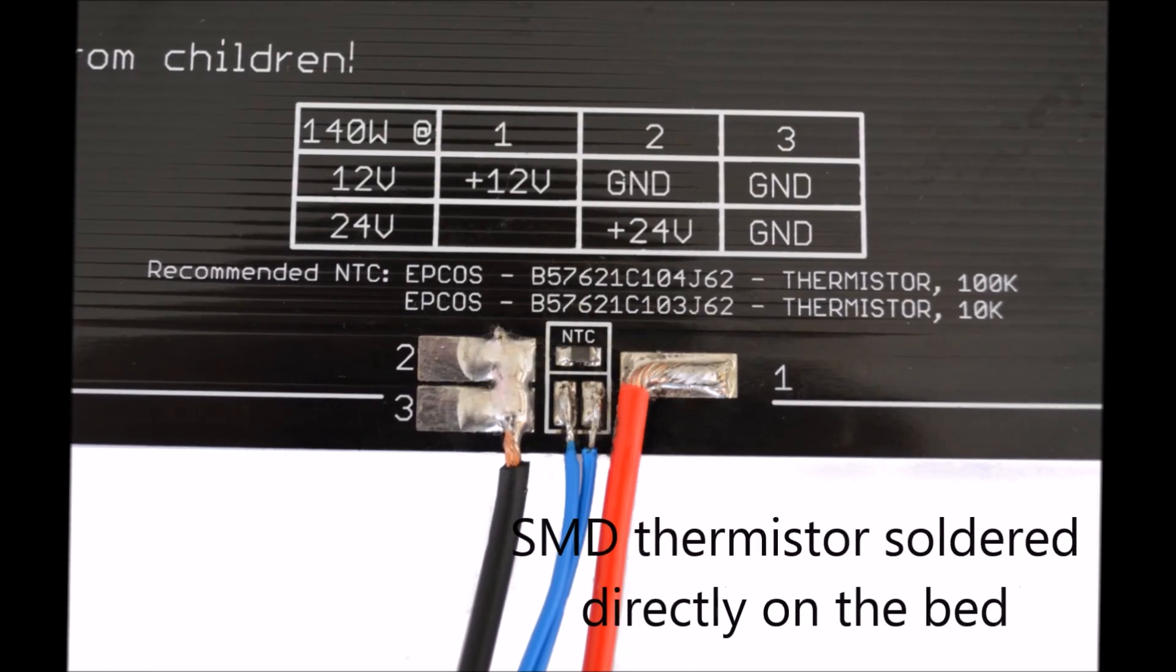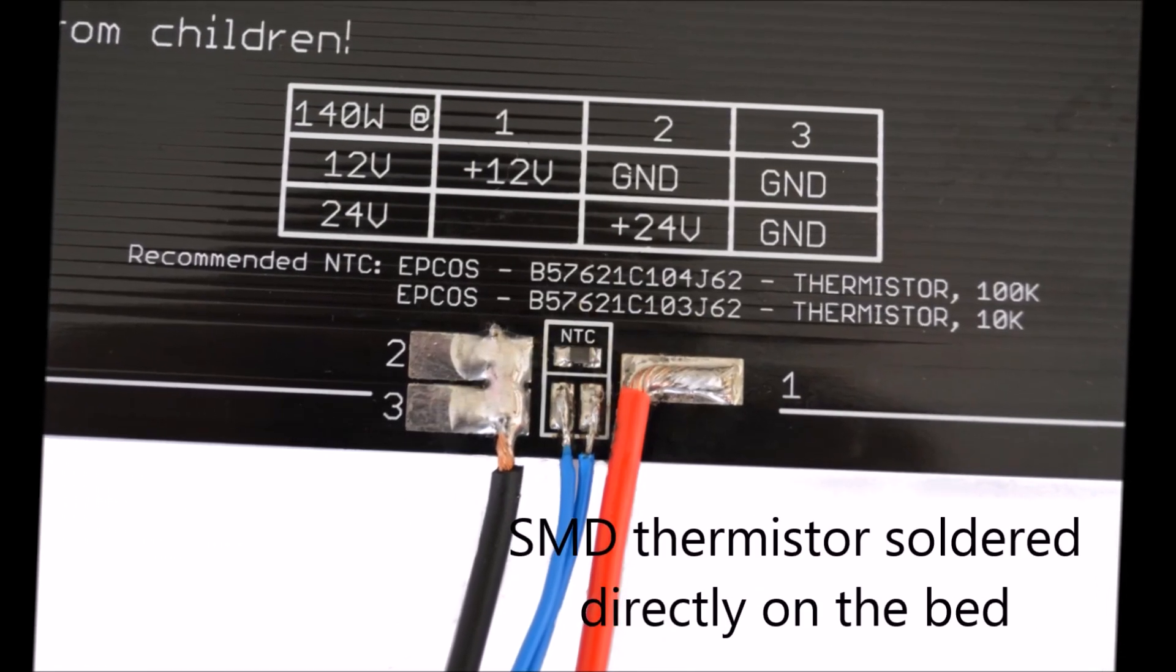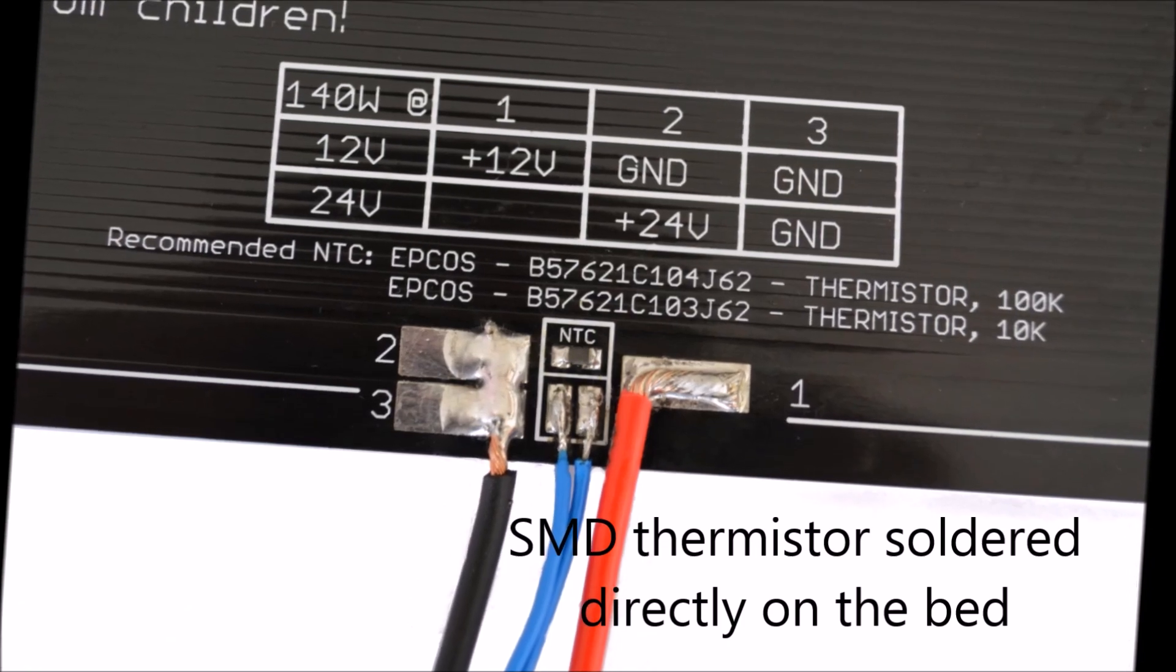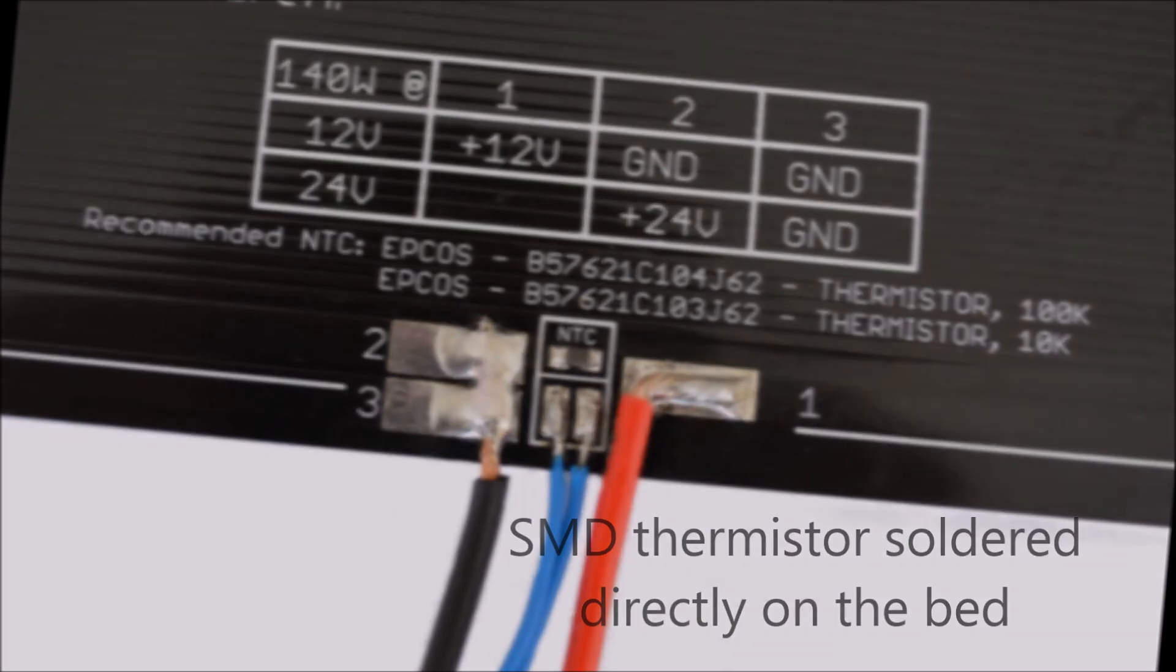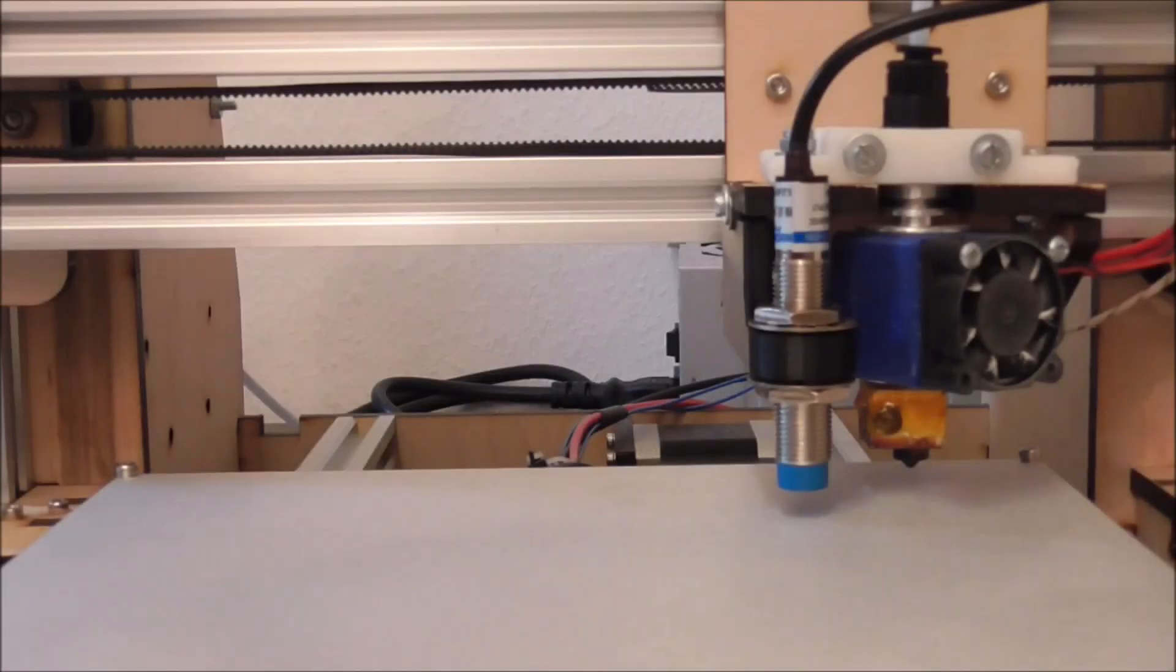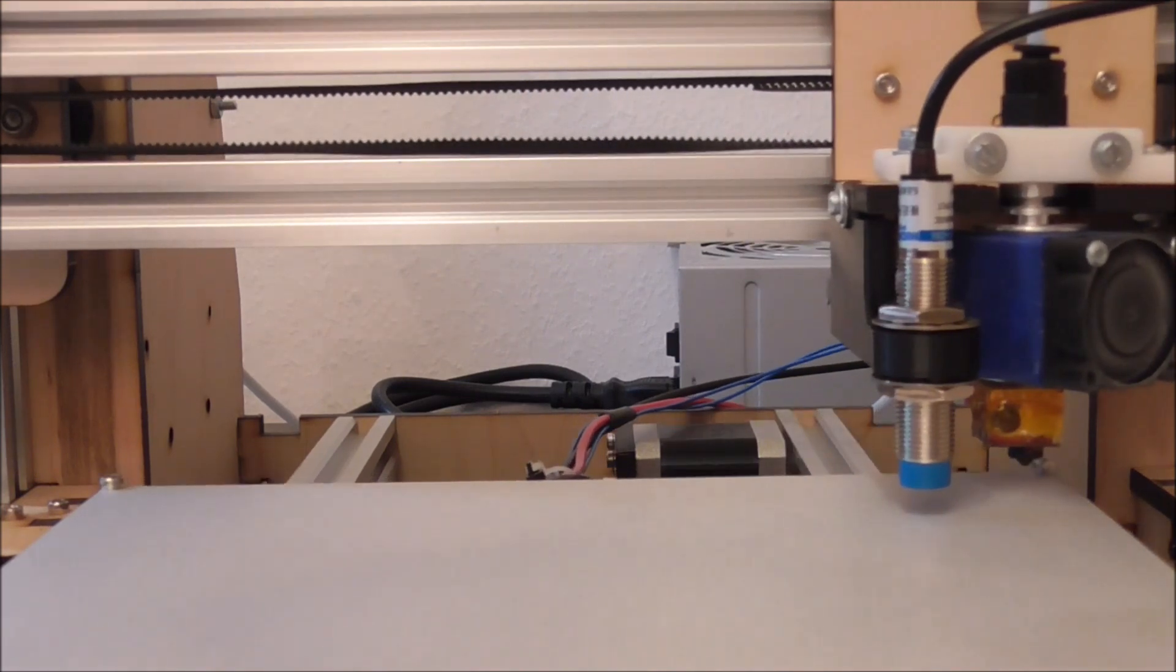This MK3 heat bed supports an SMD thermistor soldered directly on the plate. So you don't need to stick any thermistor on the back and there is no insulating gap in between the thermistor and the heat bed.